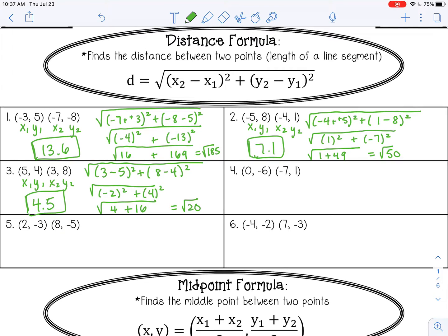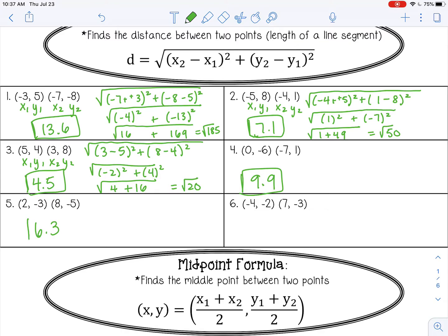So on number 4, I got 9.9. On number 5, I got 6.3. And then on number 6, I got 11.0.